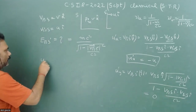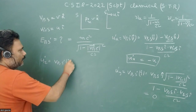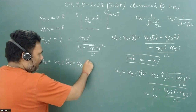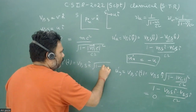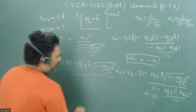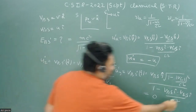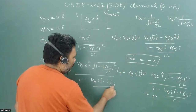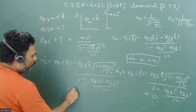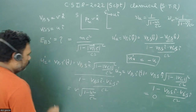Now we go for uz-dash. The formula is: (velocity of particle w.r.t. S in k-cap) × √(1 − u²/c²), divided by (1 − ux·u/c²). The x-component term is zero, and the z-component is given as v, so uz-dash = v√(1 − u²/c²).